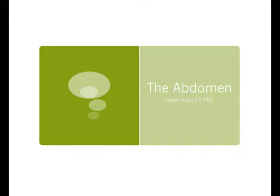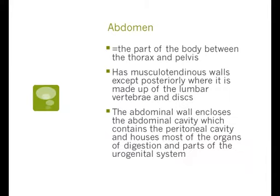A little lecture on the abdomen. The abdomen is the part of the body between the thorax and the pelvis. It has musculotendinous walls, except posteriorly where the wall is actually the lumbar vertebrae and the discs. The abdominal wall encloses the abdominal cavity, which contains the peritoneal cavity, and houses most of the organs of digestion and parts of the urogenital system.